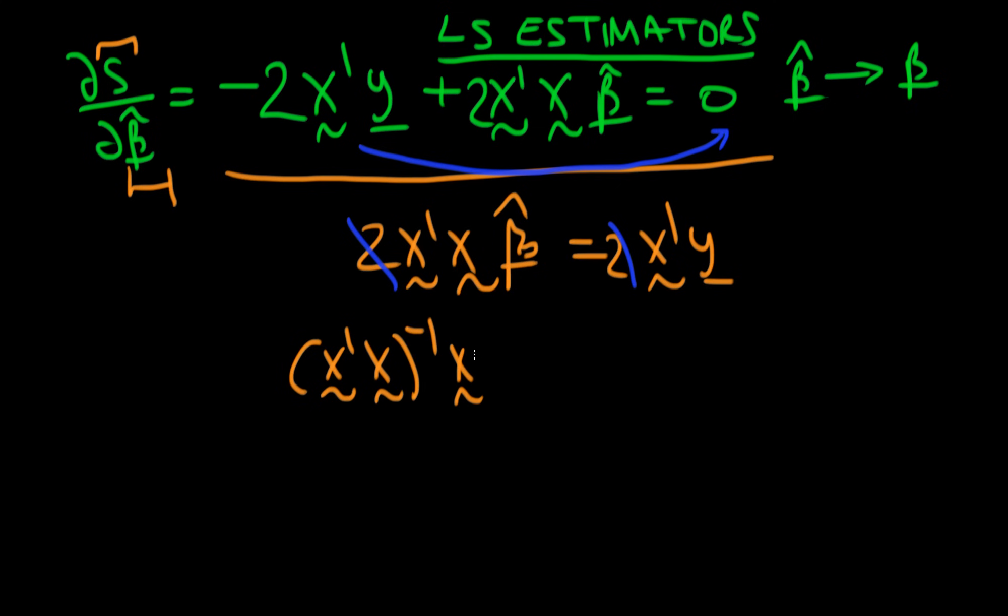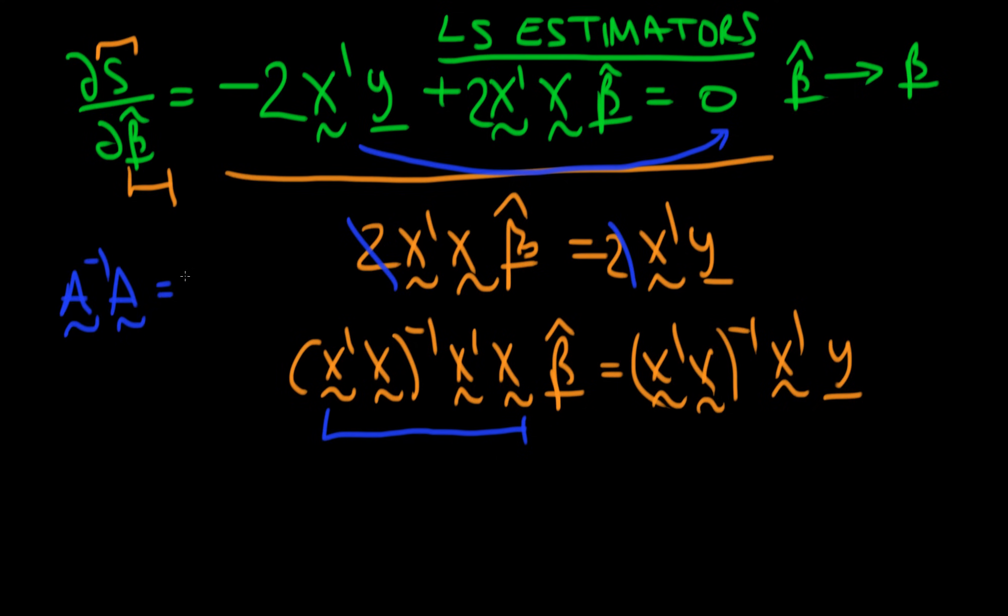So the left hand side becomes the inverse of X'X times X'X times beta hat, which is equal to (X'X)^-1 times X'Y. By pre-multiplying the left hand side by the inverse of X'X, these two terms essentially cancel one another out, because the inverse of a matrix A times that matrix A itself just yields the identity matrix. So I just get the identity matrix, which when I apply that to vector beta hat, just yields beta hat.